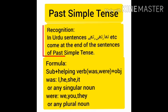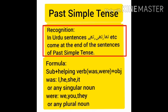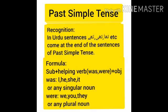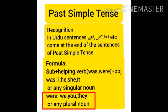Past simple tense. Recognition: In Urdu sentences, tha, thi, the, etc. come at the end of the sentences of past simple tense. Past simple tense mein Urdu ke jumle tha, thi, ya the par end hote hain. Formula: Subject plus helping verb (was/were) plus object. 'Was' is used with I, he, she, it, or any singular noun. 'Were' is used with we, you, they, or any plural noun.